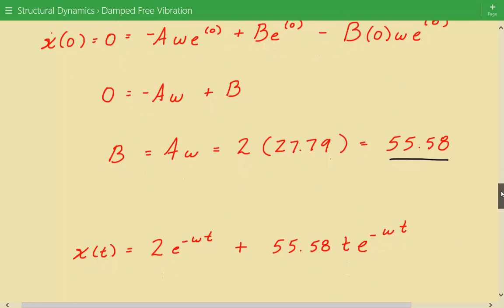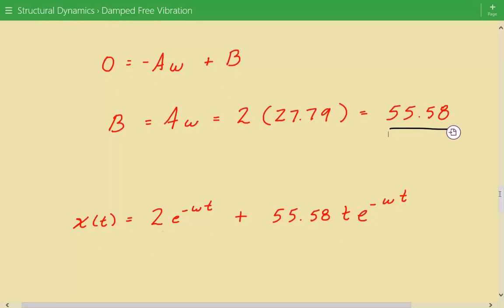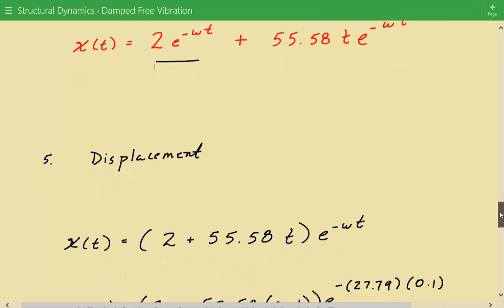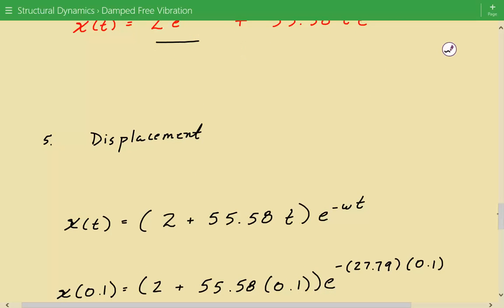So this is our complete displacement expression. 2 times e to the power of negative omega t plus 55.58 times t times e to the power of negative omega t. And now we can calculate the displacement. I just rewrote this displacement equation. I just moved the e to the power of negative omega t to the outside, and then 2 plus 55.58 times t inside the parentheses.